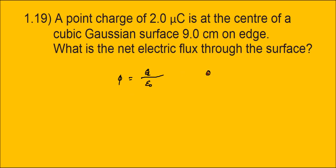So here Q is equal to 2.0 microcoulombs, which is equal to 2 times 10 to the power minus 6 coulombs, and epsilon 0 value is 8.85 times 10 to the power minus 12 coulombs squared per newton meter squared.